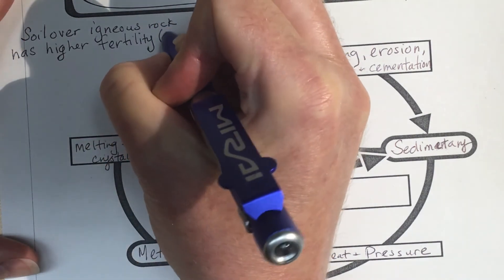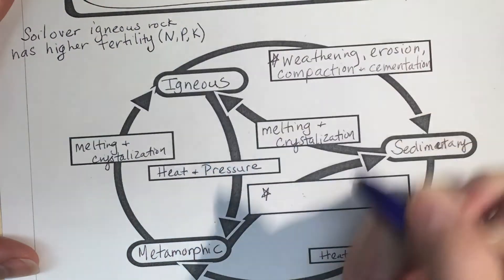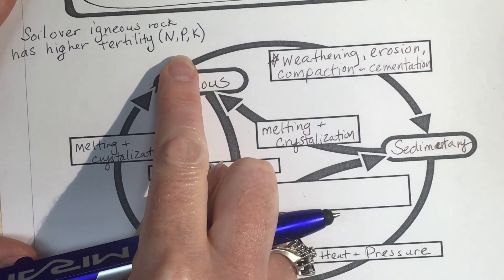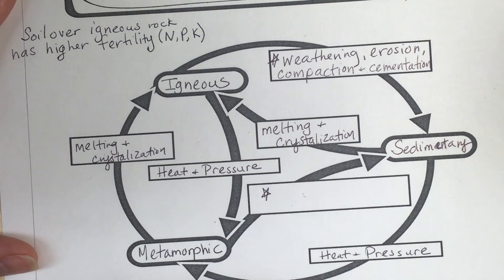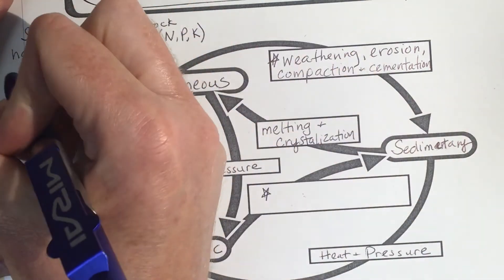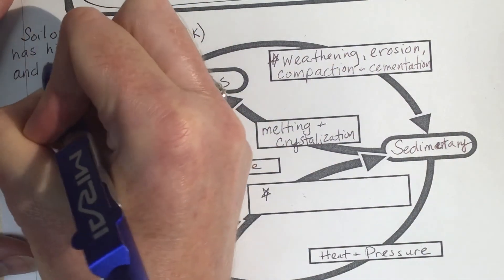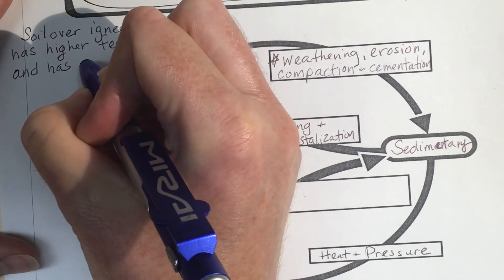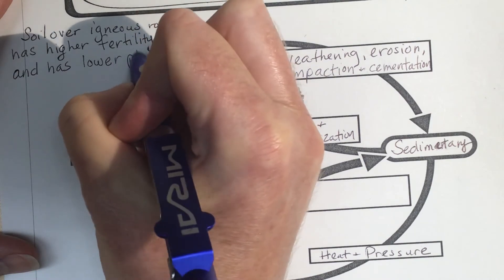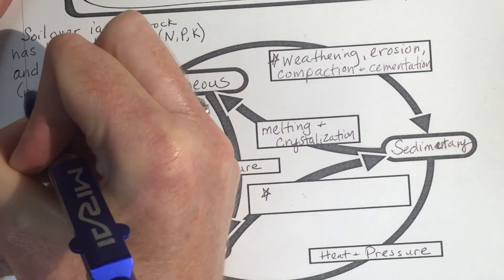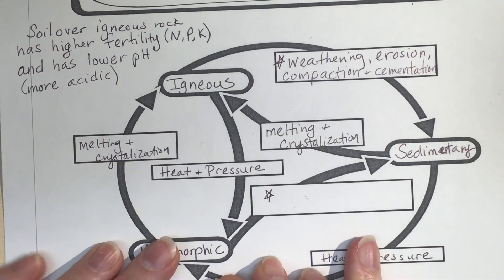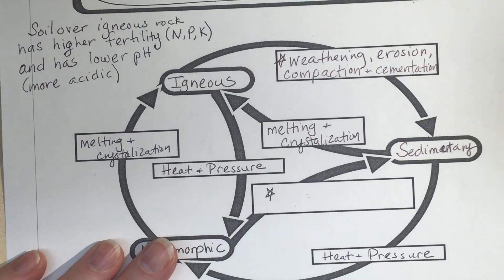And you're going to learn about something called nitrogen, phosphorus, and potassium. So these are our main nutrients in soil, NPK. You'll learn a lot more about those in chapter nine. And it has a lower pH, which means it's more acidic. Okay, this was actually on the AP test last year about soil formation over different types of rock.